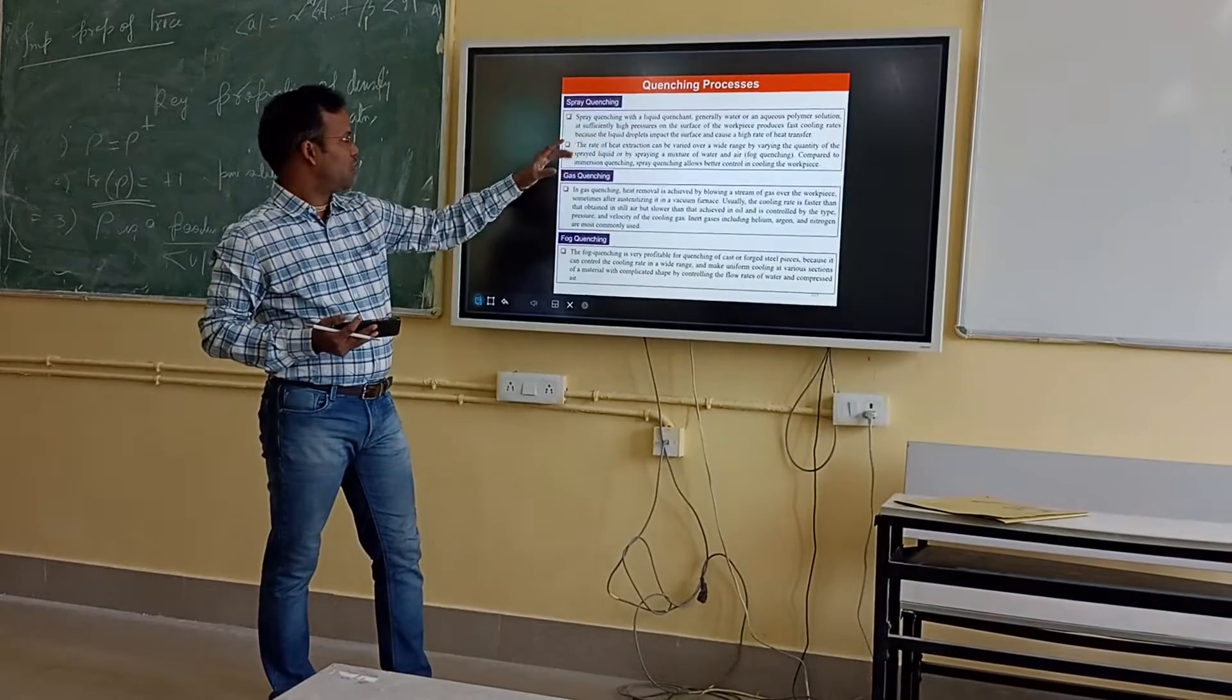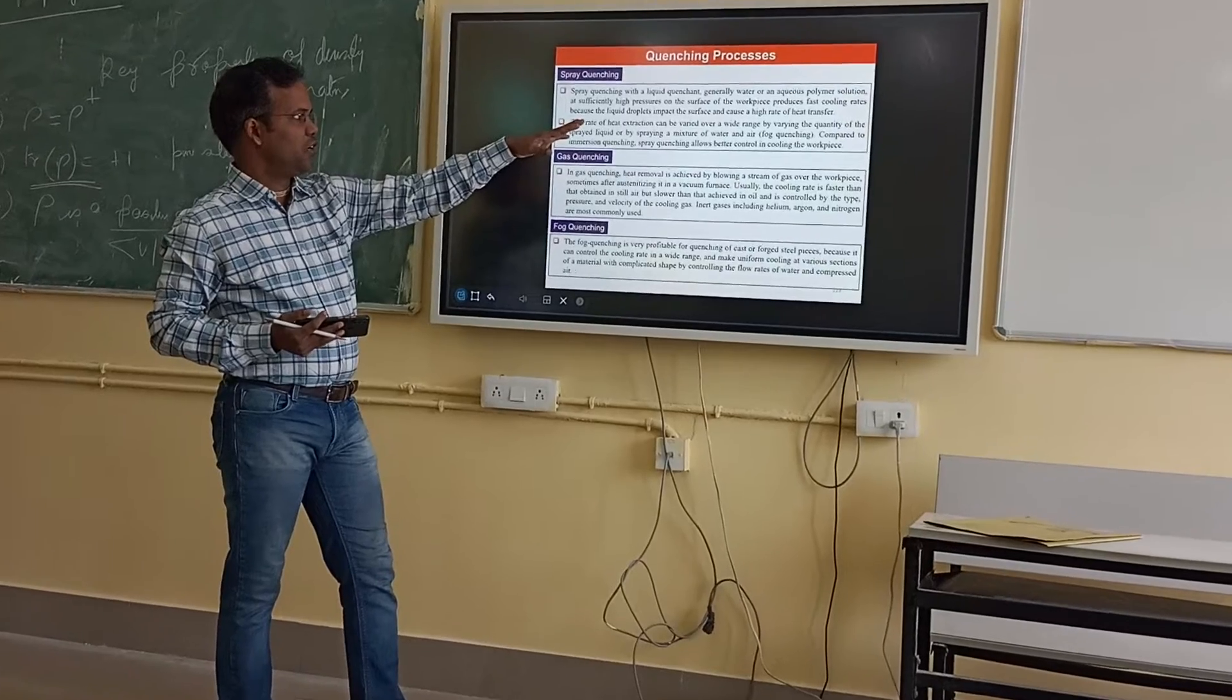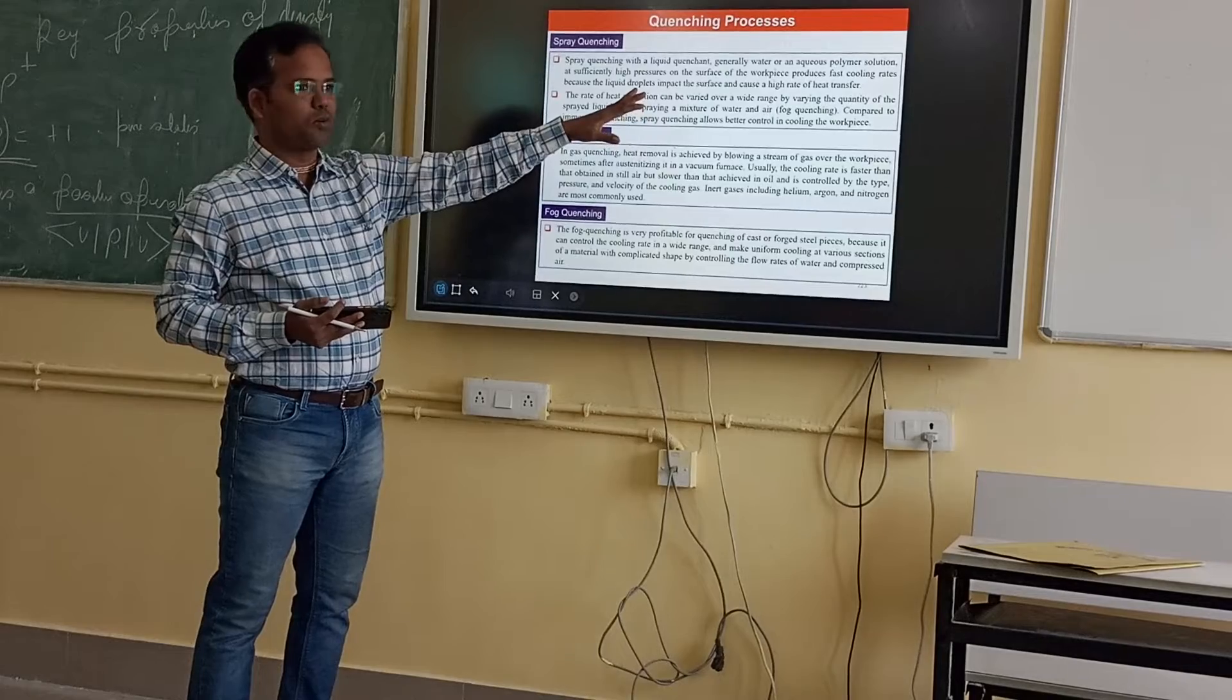Spray quenching uses water or aqueous polymer solution at sufficiently high pressure on the surface of the workpiece to produce harsh cooling rates because of the liquid droplets on the surface and cause a high rate of heat transfer.